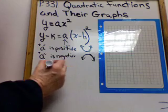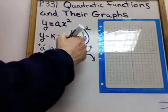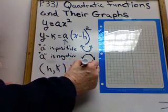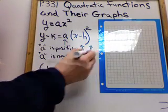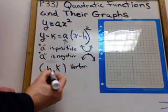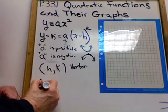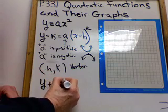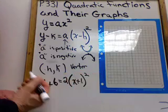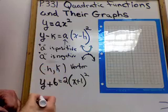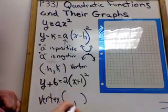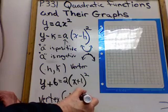Now, the K and the H. H, in this order, H, K, just like X, Y. The H is with the X. Keep that in mind. And this is what's called the vertex. The vertex, the turning point of the parabola. The lowest point or the highest point. So, the H, K is the vertex. So, you're going to get some equations that look like this. Y plus 6 equals 2 times X plus 1 squared. So, in this parabola, the vertex is, do you know what it is? Take a guess. Negative 1, negative 6.